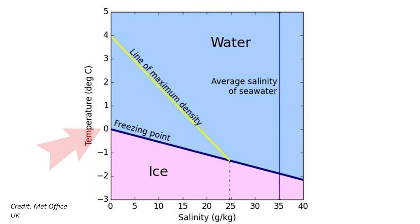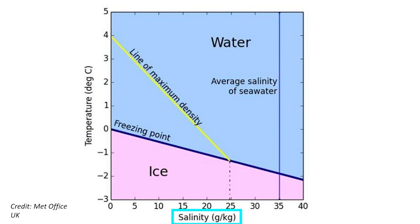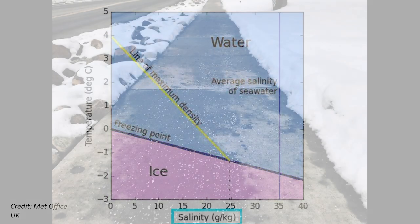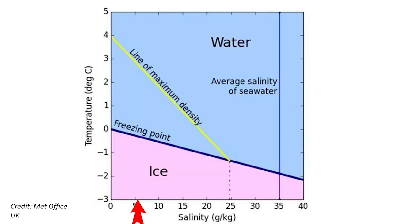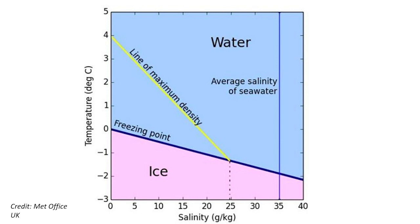Why isn't it zero degrees Celsius — the point at which liquid water normally freezes? It's everything to do with the salt content in the ocean. Just like we scatter salt on our sidewalks and roads to melt snow and ice, the salt in the ocean lowers the freezing point of water, so it has to cool even further for sea ice to form.